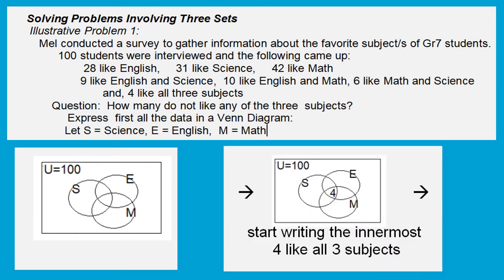The next thing to consider is the concept that 4 like all three subjects. Since we have information that someone likes all three subjects, you are going to place it at the intersection of the three subjects — Science, English, and Math — just as shown here on the Venn diagram.